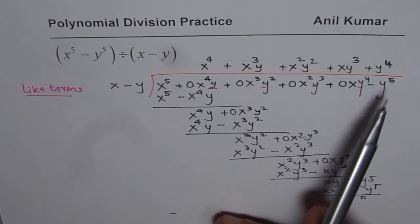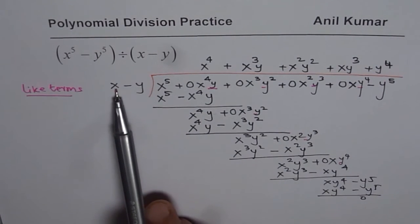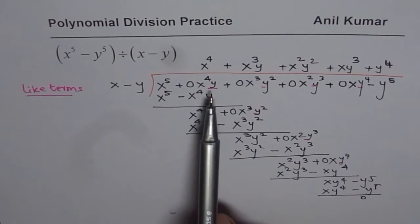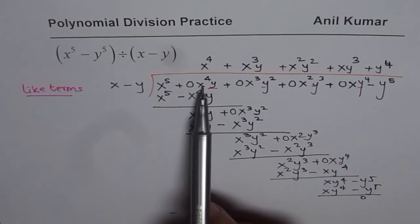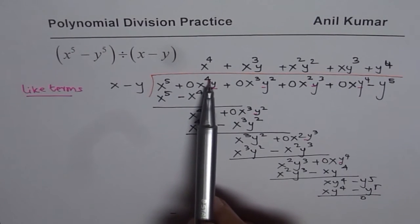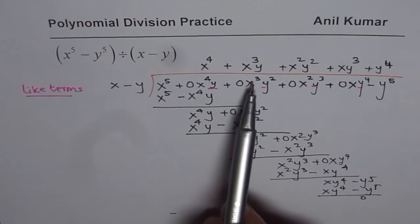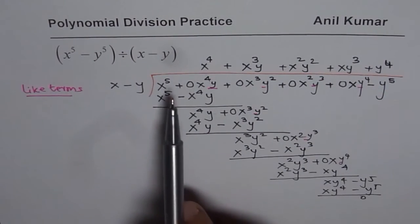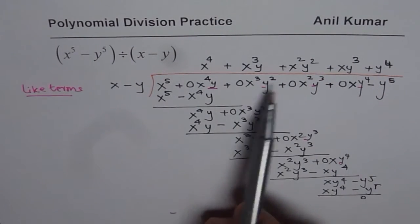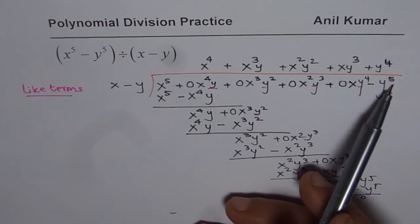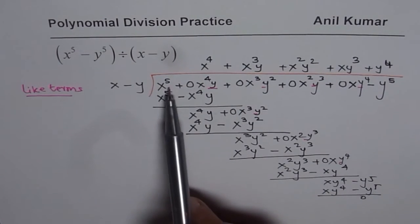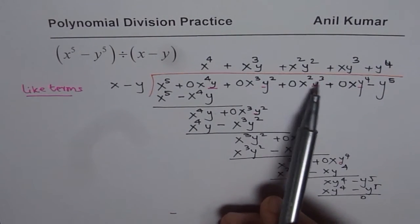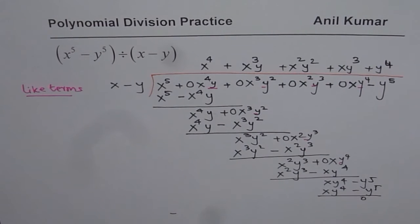What did you notice here? We have to introduce these y's also since we are dividing by x minus y. What's really happening is the degree of x and y combined remains constant: 5, 4 plus 1, 3 plus 2, 2 plus 3, 1 plus 4, 0 plus 5. The degree of x decreases from 5, 4, 3, 2, 1, 0, while the degree of y increases from 0, 1, 2, 3, 4, 5.